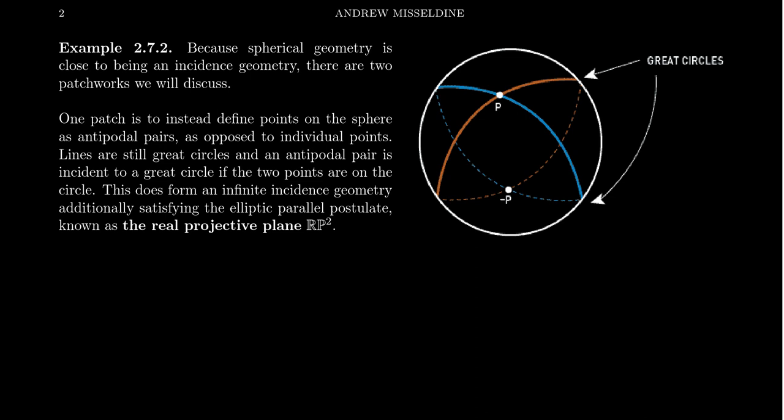Lines are defined to be great circles — that is, circles on the surface of the sphere whose diameter is the same as the diameter of the sphere. Incidence just means a point is incident to a line if, as a set, the point belongs to the great circle. So the circle is a collection of points.